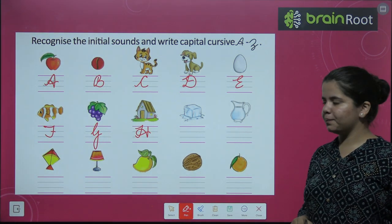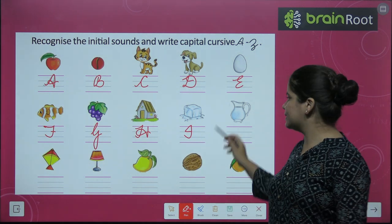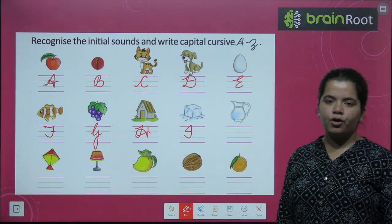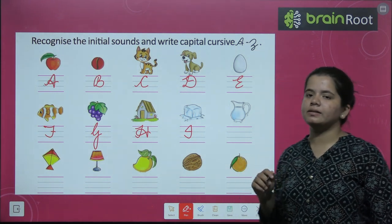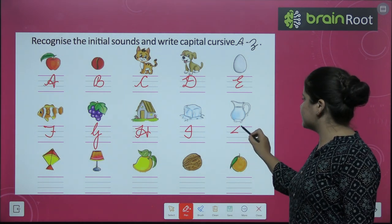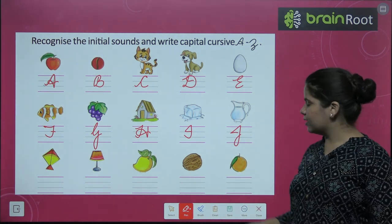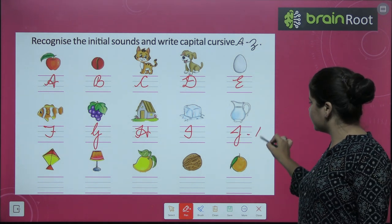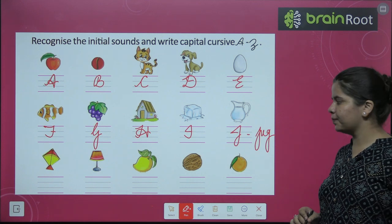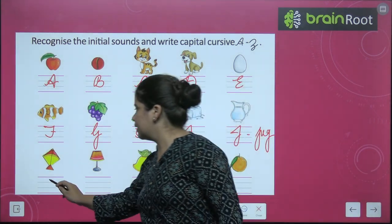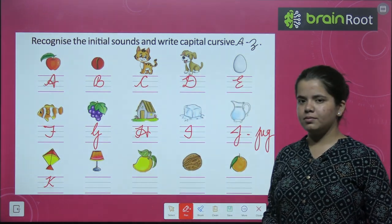Next is what? Tell me. This is ice. I for ice. Next is a picture of a jug. J for jug. J-U-G, jug. Next is kite. K for kite.